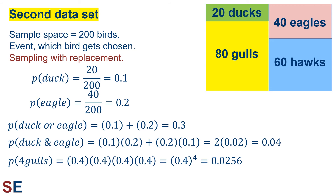The probability of choosing four birds and they're all gulls would be the probability of choosing a gull — 80 out of 200 equals 0.4 — for each of the four individuals, which equals 0.4 raised to the fourth power, which equals 0.0256. While the probability of duck or eagle doesn't depend on what type of sampling we use, the last two probabilities will be different if we sample without replacement.